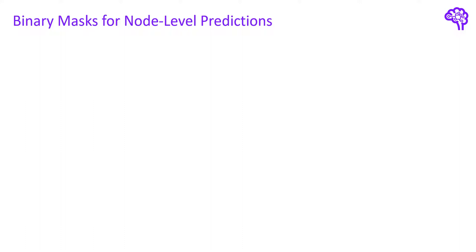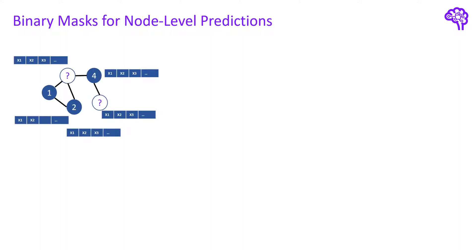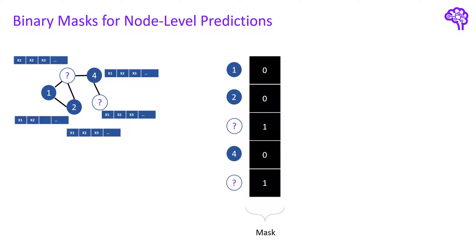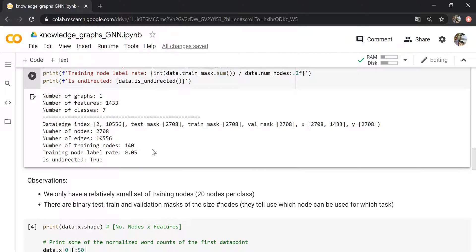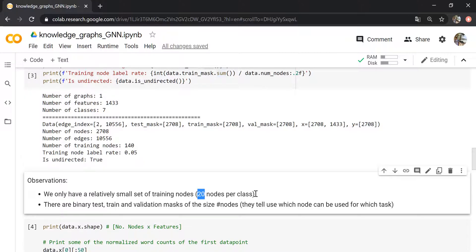Before moving on, let me show you how the binary masks look like. For node-level prediction problems you typically have some unlabeled nodes for which you want to perform predictions. In our case we have publications with an unknown document type, so we don't have labels for these nodes during training. They need to be masked out during training and masked in during prediction. Using the train mask and summing the entries, we can see we have exactly 140 training nodes — only 5% of all nodes — specifically 20 nodes per class. The rest is unlabeled.